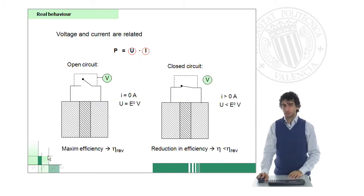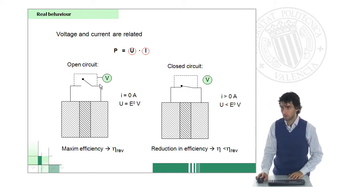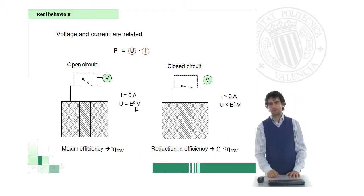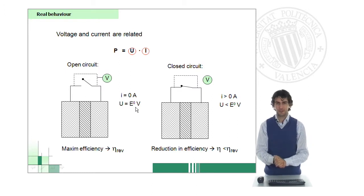Fuel cells work at their best efficiency, at the maximum efficiency, in an open circuit - when there is no flow of electrons at all. In this case, when the intensity is zero, we have the maximum potential of voltage, which is the reversible potential. This is the potential you can read in any book of electrochemistry or any table.